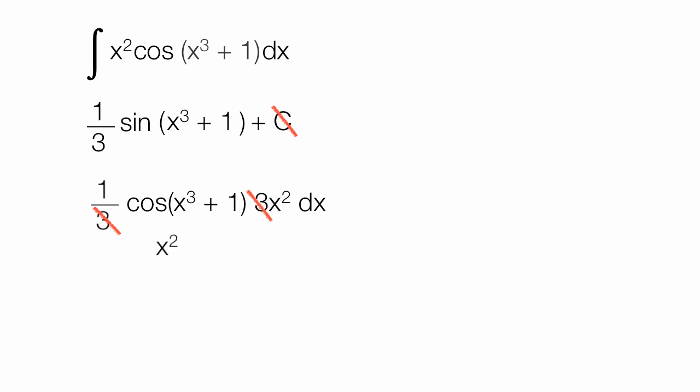I'll just put the x-squared in front, so I have x-squared times cosine times x-cubed plus 1, which is my original problem. So it looks like I got it right.